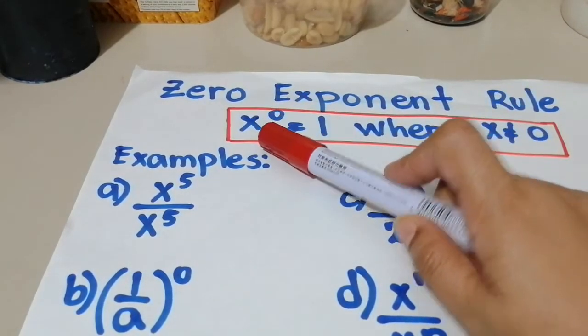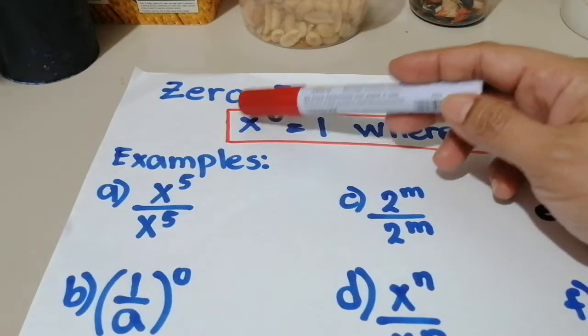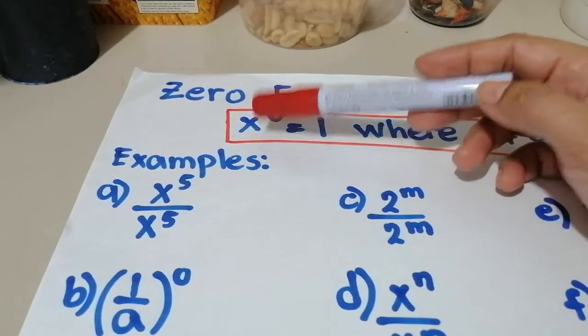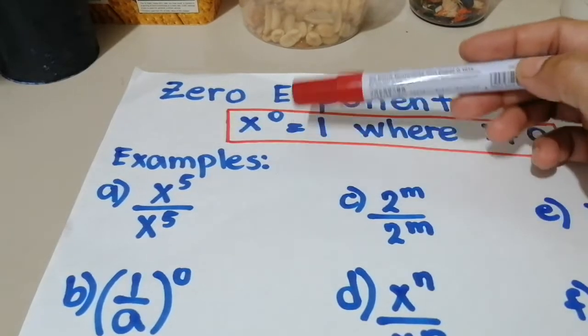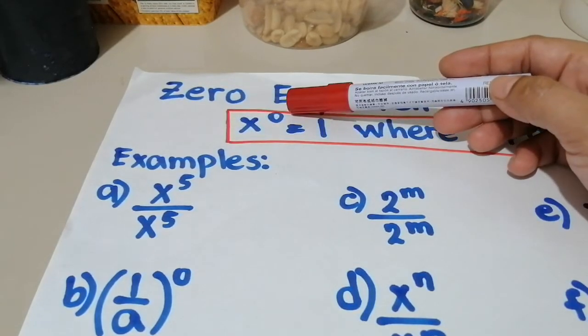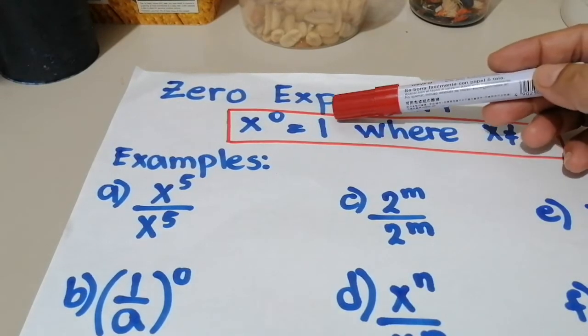Kahit ano number, kahit anong number yan, kahit pa exponent, kahit anong number, 1, 100, or kahit pa yung number na yan ay fraction, basta ang exponent niya ay zero, laging ang answer doon ay one. It's always one.